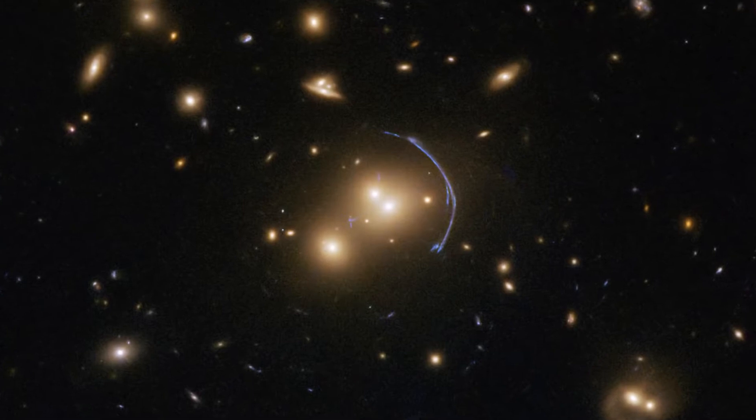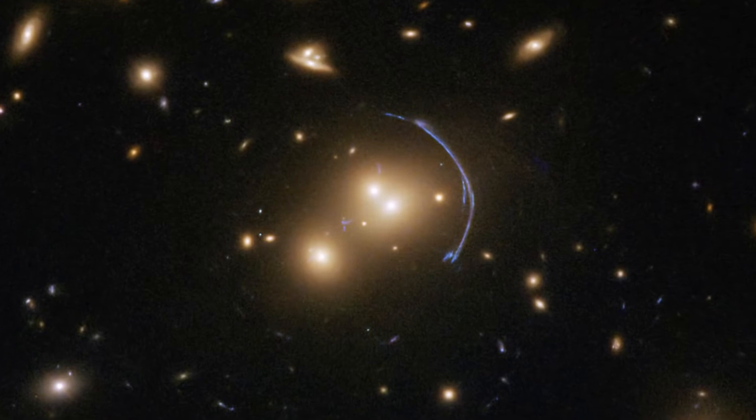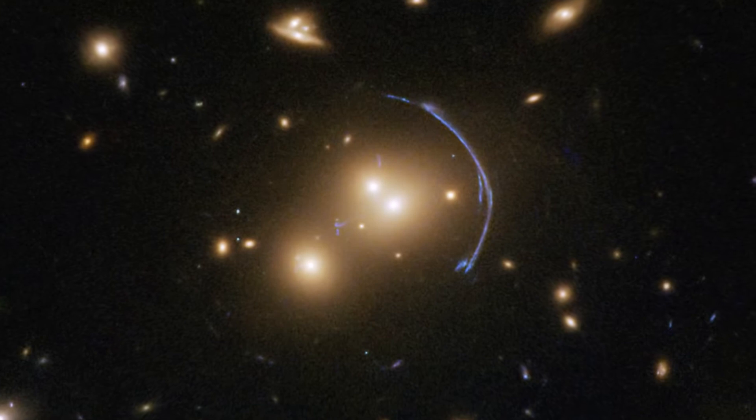Hubble can resolve details within the multiple banana-shaped arcs that are one of the main results of gravitational lensing, as the images of background sources are distorted.